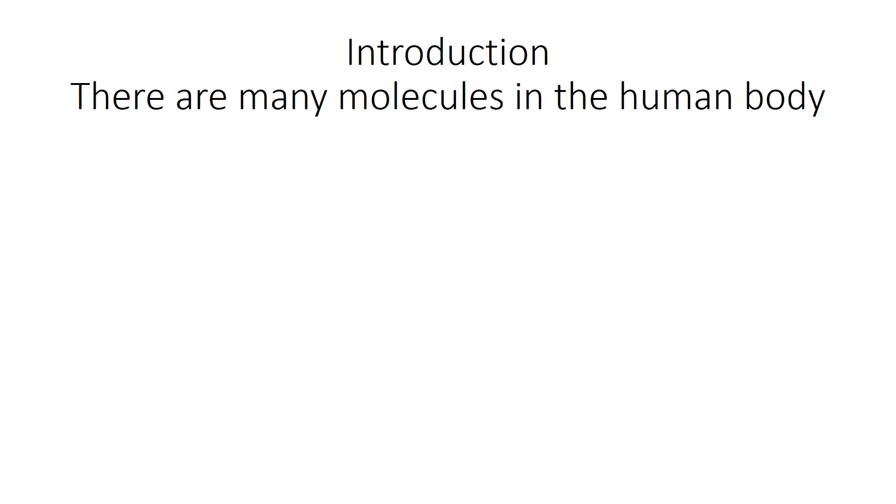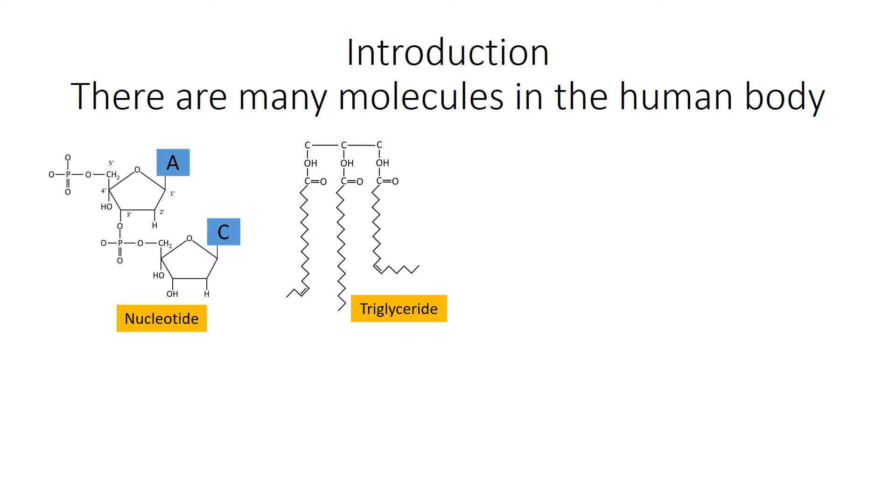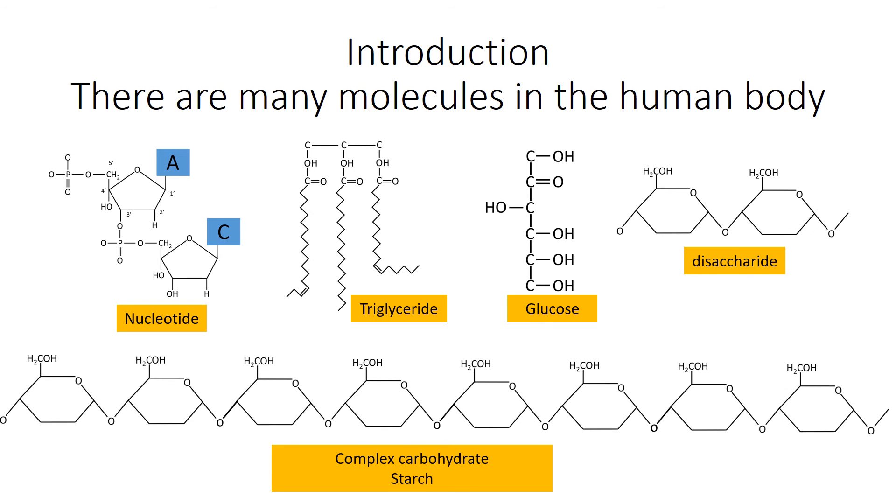Many molecules in the human body include the nucleotides. This is actually two nucleotides held together. This is a triglyceride, a type of fat. This is a glucose molecule. This is what's sweet. It's a simple sugar inside of your soft drinks. And this would be a disaccharide. And this long molecule would be a complex carbohydrate. And you might notice that it's a repeating unit of many of those glucose molecules.